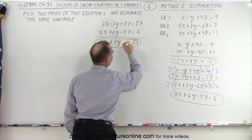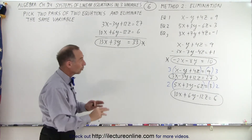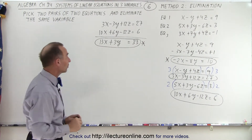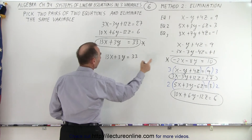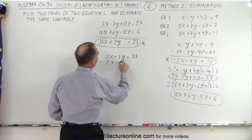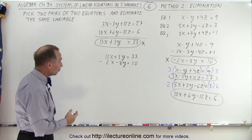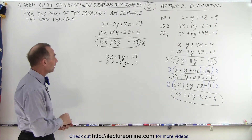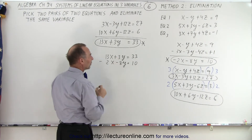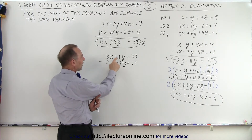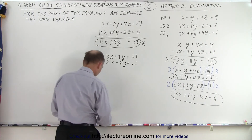So now I take these two equations: 13x plus 3y equals 33, and minus 2x minus 8y equals 10. Two equations, two unknowns, no variable z. I can solve those simultaneously using the method of elimination again. Notice we have a plus 3y and a minus 8y. So if I multiply the top equation by 8 and the bottom equation by 3, the y's will be eliminated.